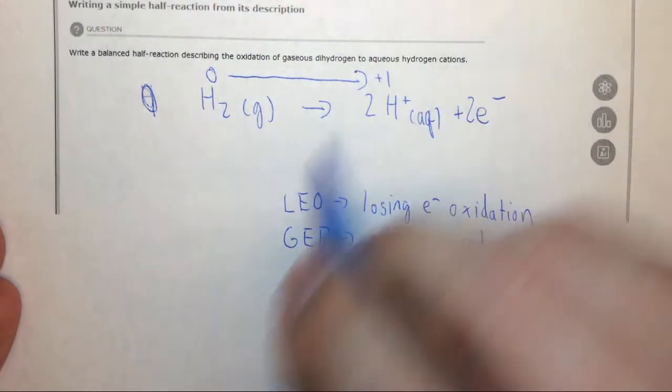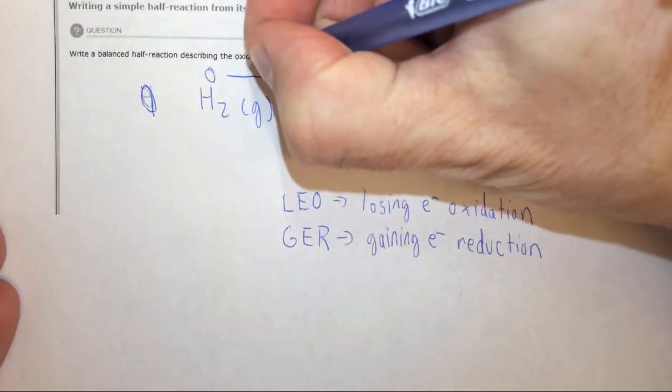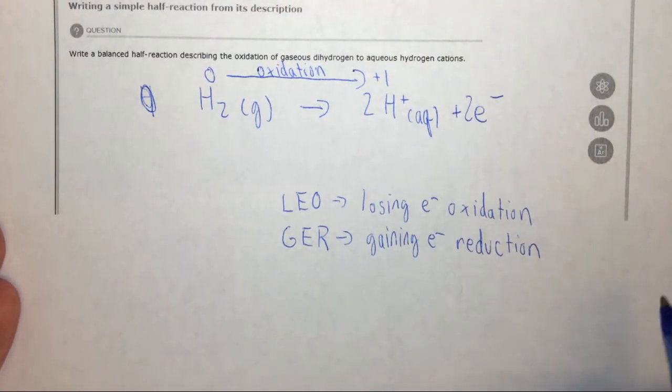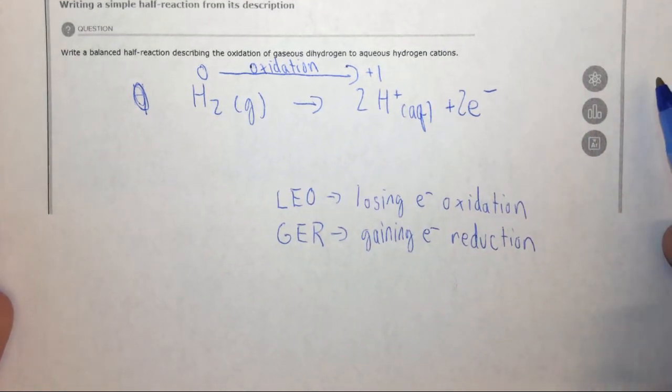So it lost an electron. Losing electrons is oxidation, so this is oxidation. Where did that electron go? That electron must have come off, and this is a half reaction of course. The other half reaction would have accepted this electron.